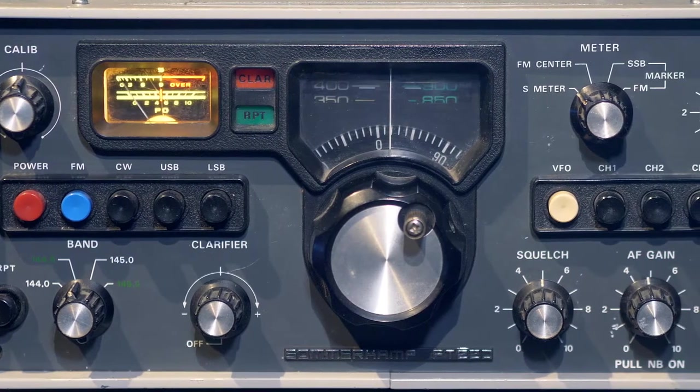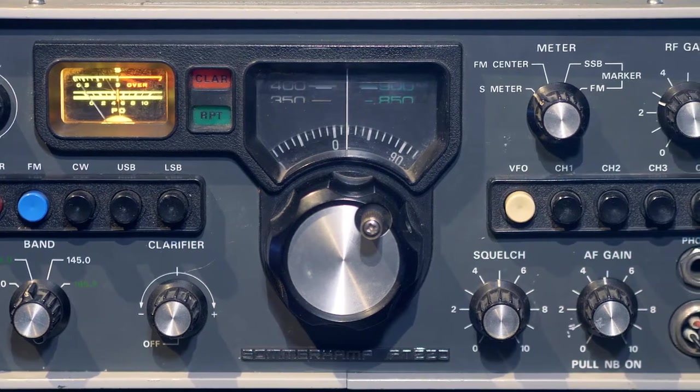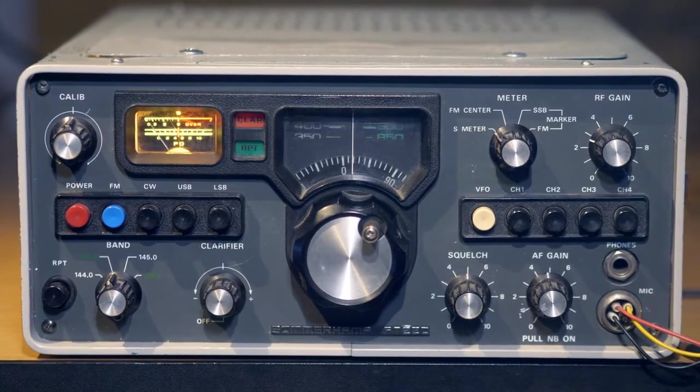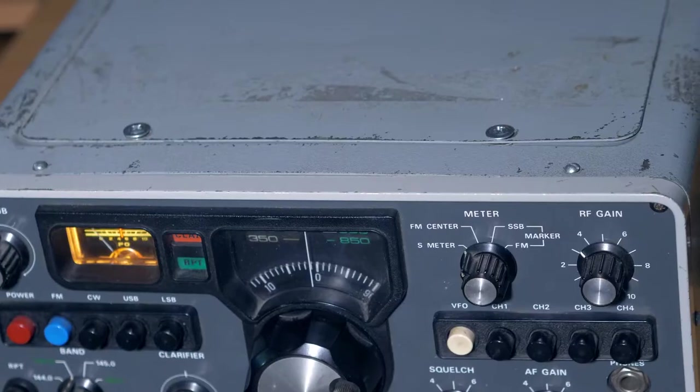This transceiver has been produced and sold since 1974, this is a technique of the 70s. Designed for radio amateurs, for operation in the amateur 2 meters band. Frequency range from 144 to 146 MHz. There is no complete coverage of the entire professional VHF band. This transceiver is intended for radio amateurs only. It works in frequency modulation, in single sideband modulation, upper and lower sideband, and in telegraph. This is not just a VHF radio designed for radio communication with a neighboring house, but it is a full-fledged transceiver, it can conduct long-distance communications in the VHF band using directional antennas.